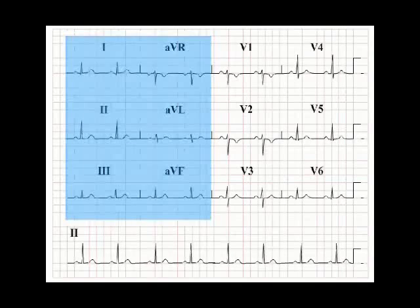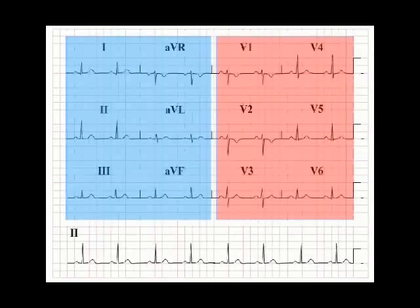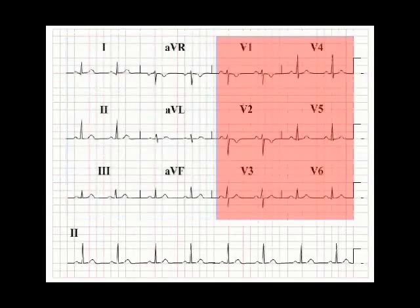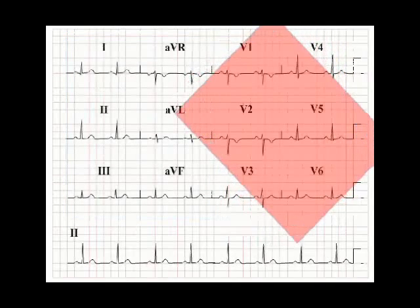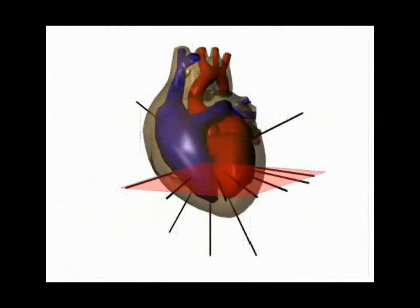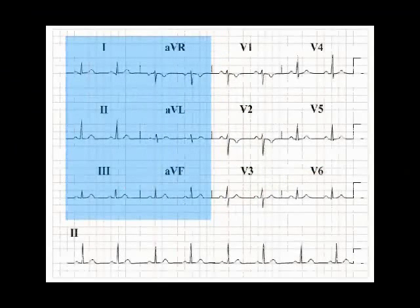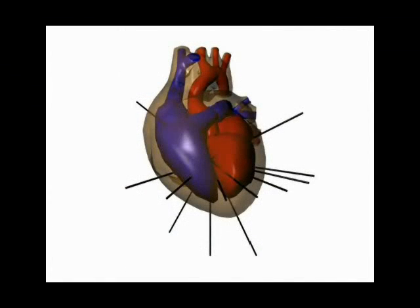Consider the 12 leads in two groups of six, with the six chest leads, also referred to as the precordial leads, examining the heart in the horizontal plane, and a second group of six leads which examine the heart in the vertical plane. We will first deal with the horizontal group, the precordial or chest leads.